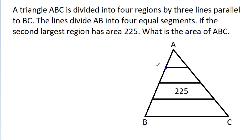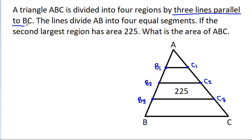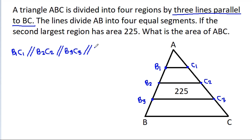Suppose this point is B1, this point is B2, and this point is B3, and C1, C2, C3. So the three lines are parallel to BC. That means B1C1 will be parallel to B2C2, will be parallel to B3C3, will be parallel to BC.